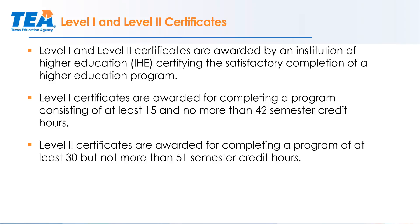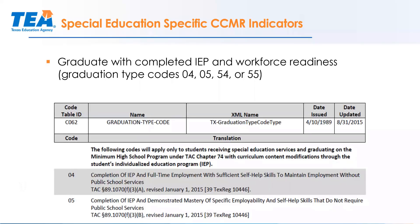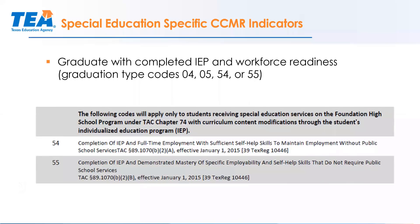Note that certificates are different from certifications: certificates are awarded by institutions of higher education, while certifications are administered by a certification body like a trade association. This data comes to us from the Texas Higher Education Coordinating Board. New for 2019, current SPED students can be considered career ready if they graduate with a completed IEP and workforce readiness using graduation type codes 04, 05, 54, or 55 from TEAMS. For example, code 04 applies if the student has full-time employment with sufficient self-help skills to maintain employment without public school services; code 05 if they've demonstrated mastery of specific employability and self-help skills.